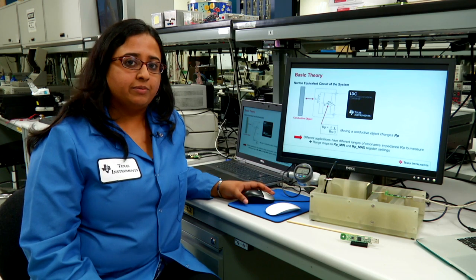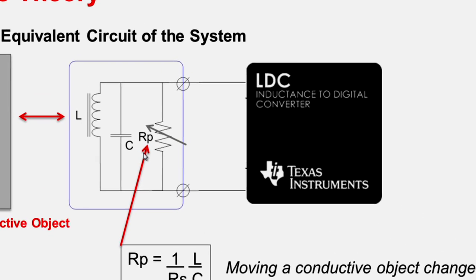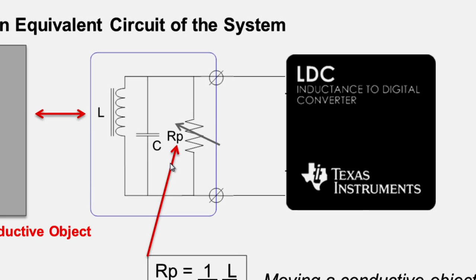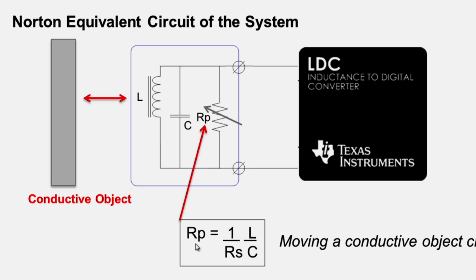To go a step further, you can model the RS as RP. RP being a parallel parasitic resistance as a Norton equivalent circuit of the system. Now, RP can be derived using this simple equation here. But similarly, as you move your object closer or further away from the coil, not only are you changing the inductance, you're also changing RP.